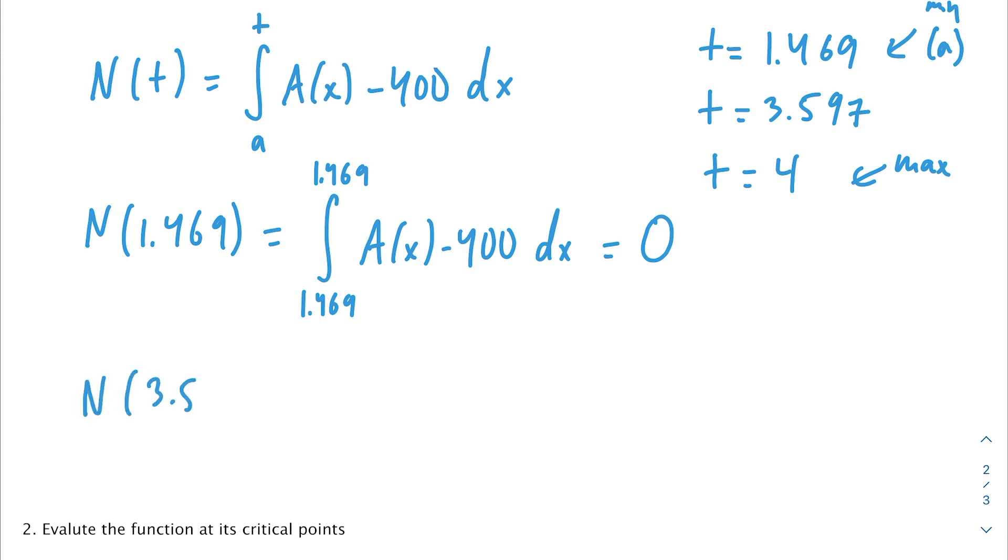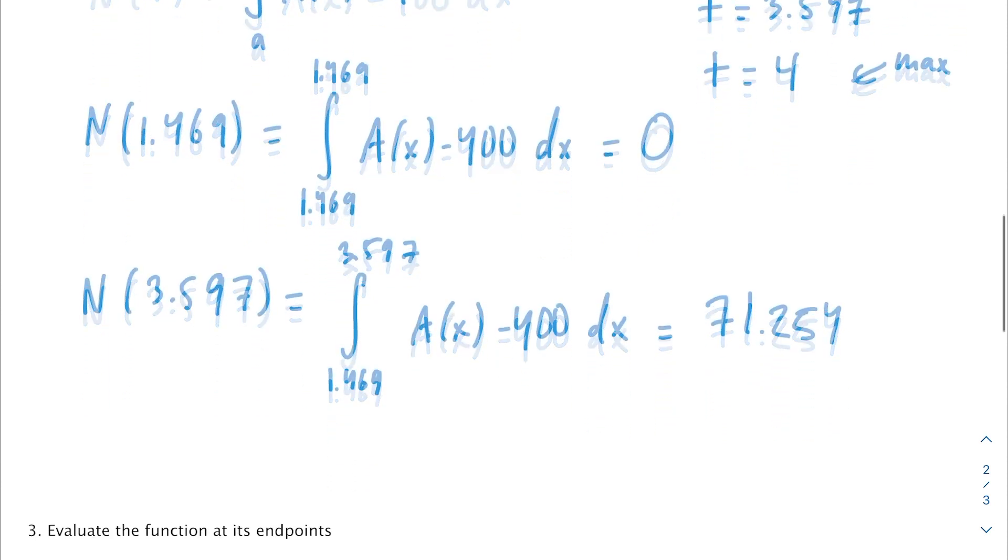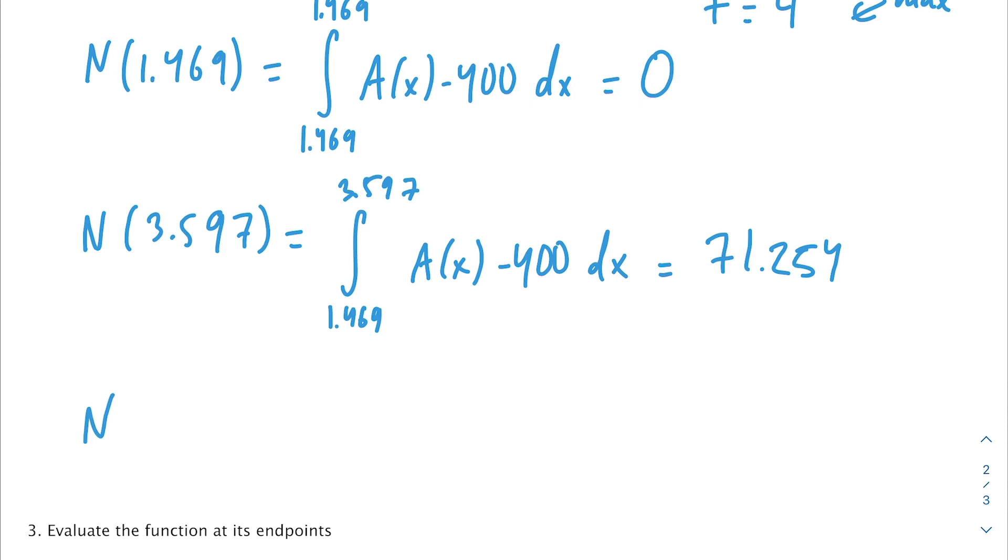Moving on to the next t, we get N(3.597). So from 1.469 to 3.597, A(x) minus 400 dx. For this one, we get that our value is around 71.254. Then we want to evaluate the endpoint of our interval, which is at time t equals 4. So from 1.469 to 4, A(x) minus 400 dx equals 62.338.